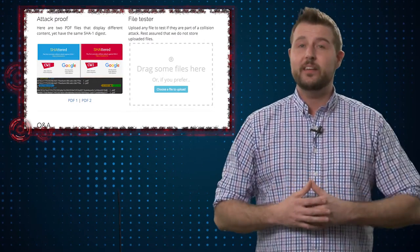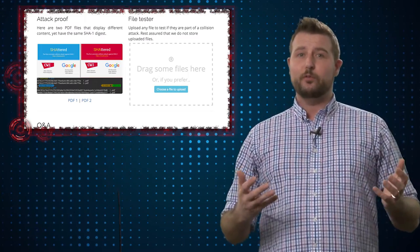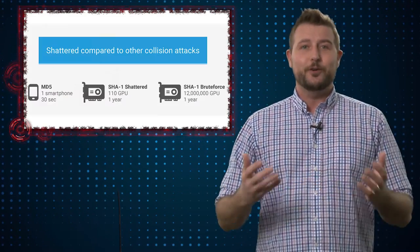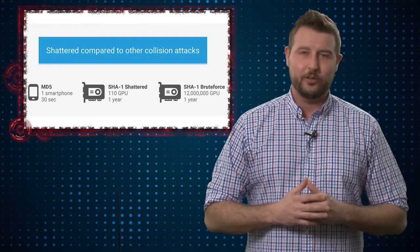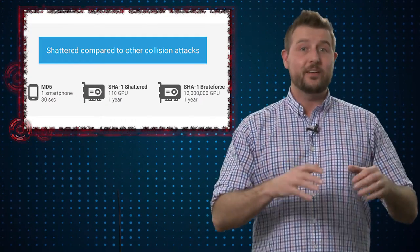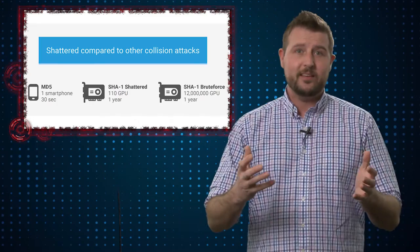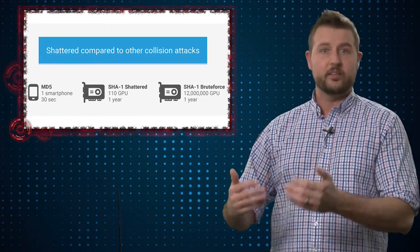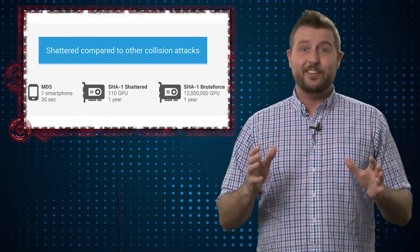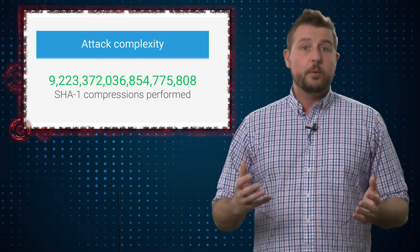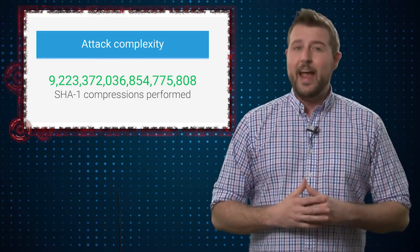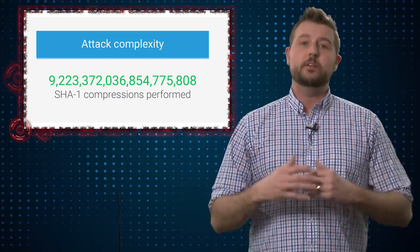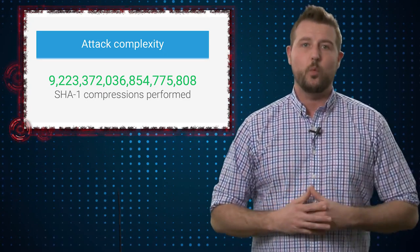The still somewhat good news is that Google has significant resources and this still takes a ton of computing power. If you translate this to just one single computer CPU or one single computer GPU, it's still going to take years and years. But they say an attacker with significant resources and funds could actually build a computer that could cause SHA-1 collisions.